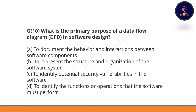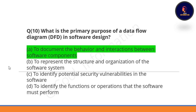Question 9: Software engineers shall — Option A is correct — act consistently with the public interest. Question 10: What is the primary purpose of a data flow diagram in software engineering? The primary purpose is to document the behavior and interaction between software components. Option A is correct.